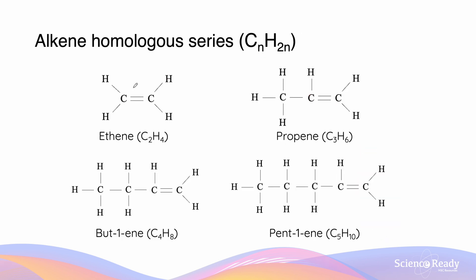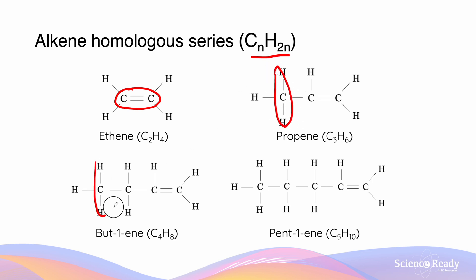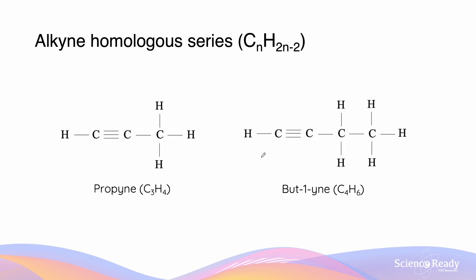Alkenes are compounds which contain the C=C double bond. They have the general formula CnH2n, and the homologous series again differs by a CH2 group. Alkynes have the general formula CnH2n-2 and have a characteristic C≡C triple bond.